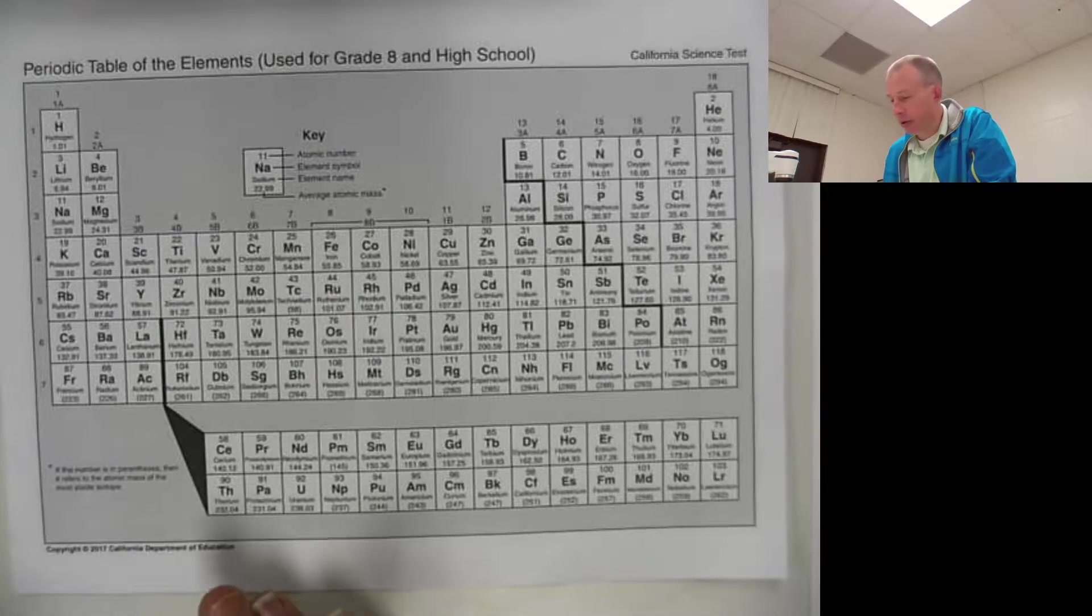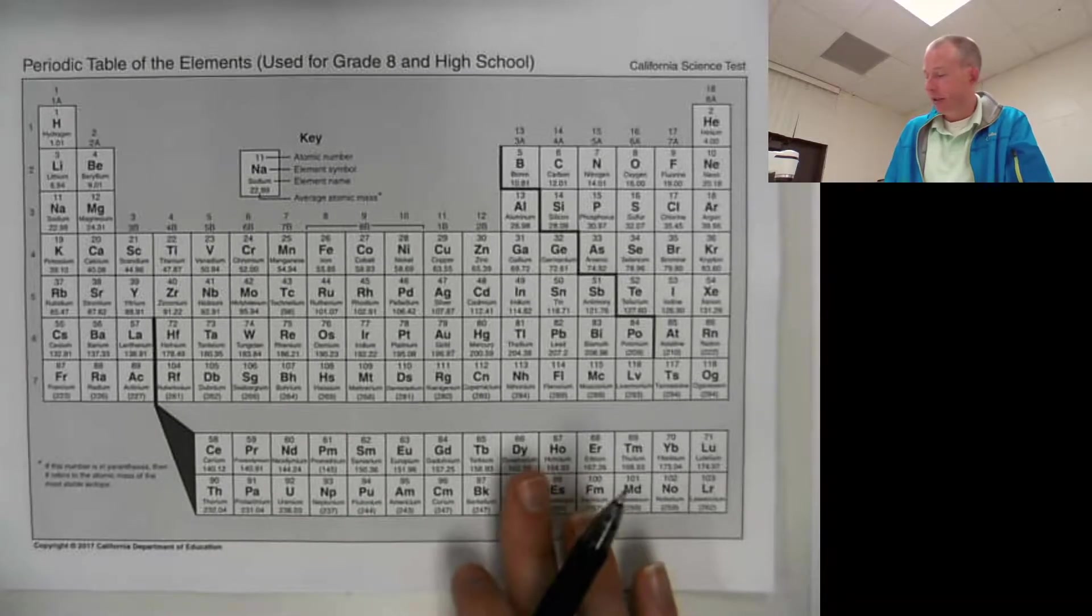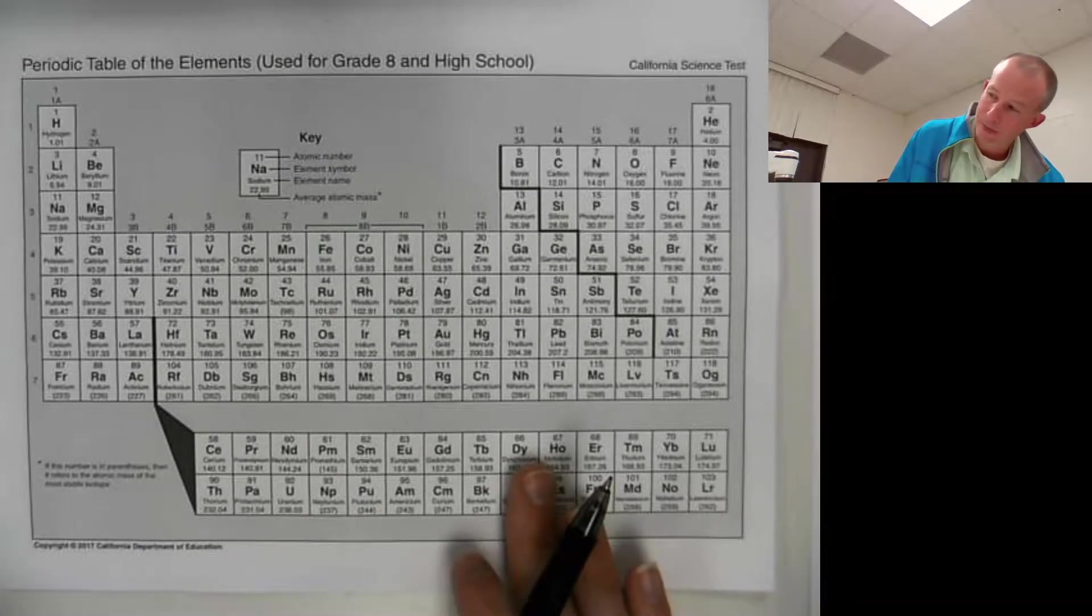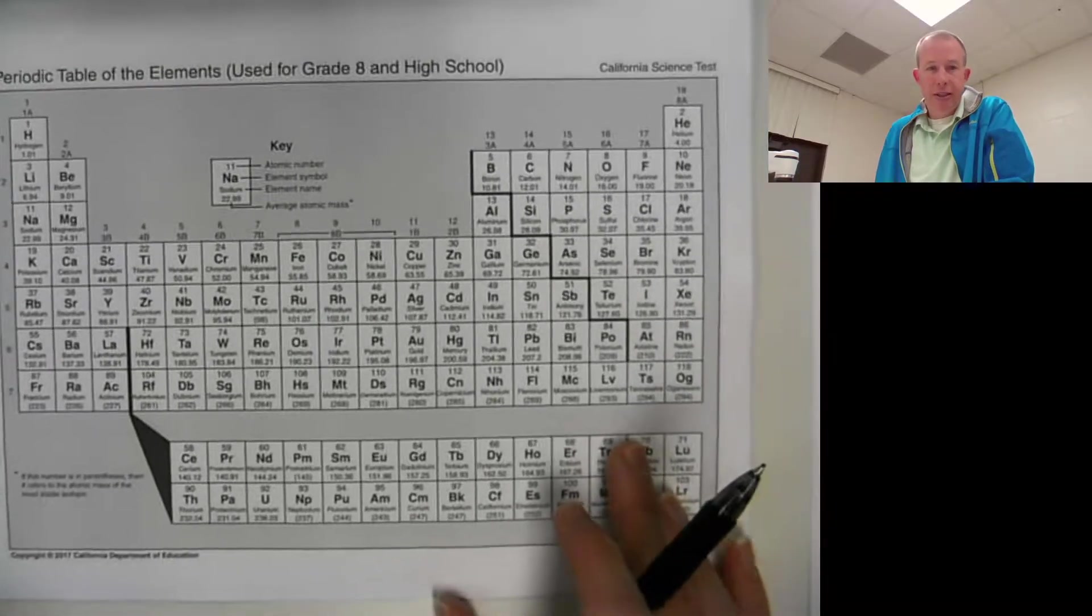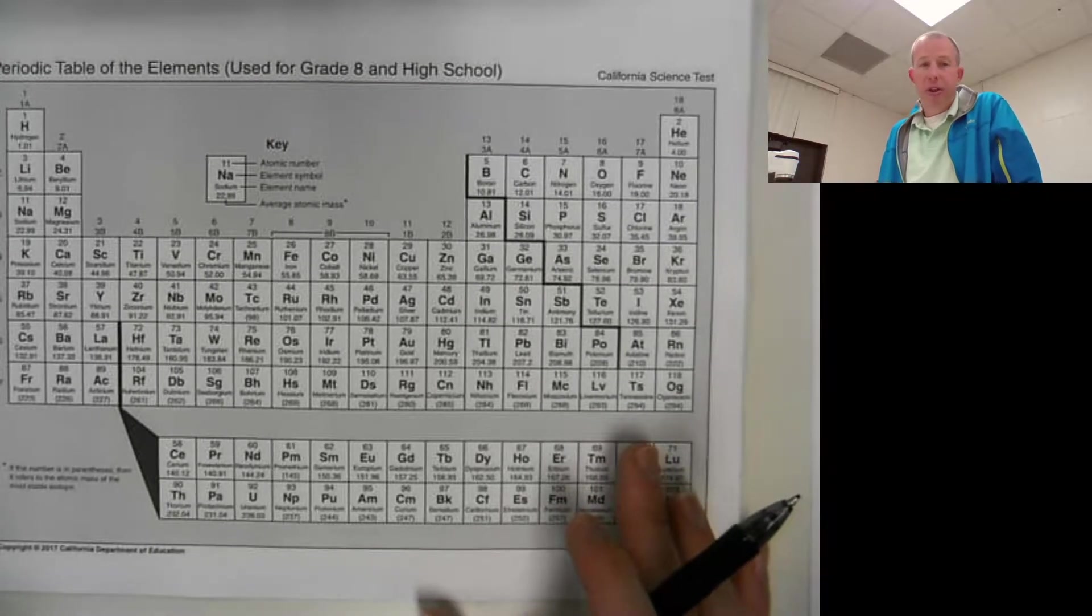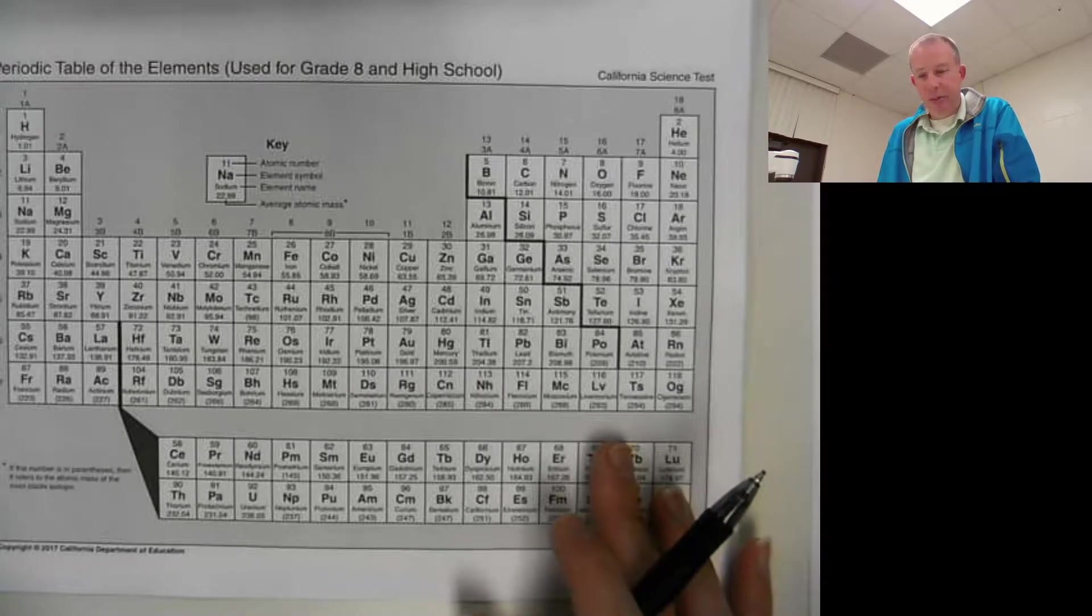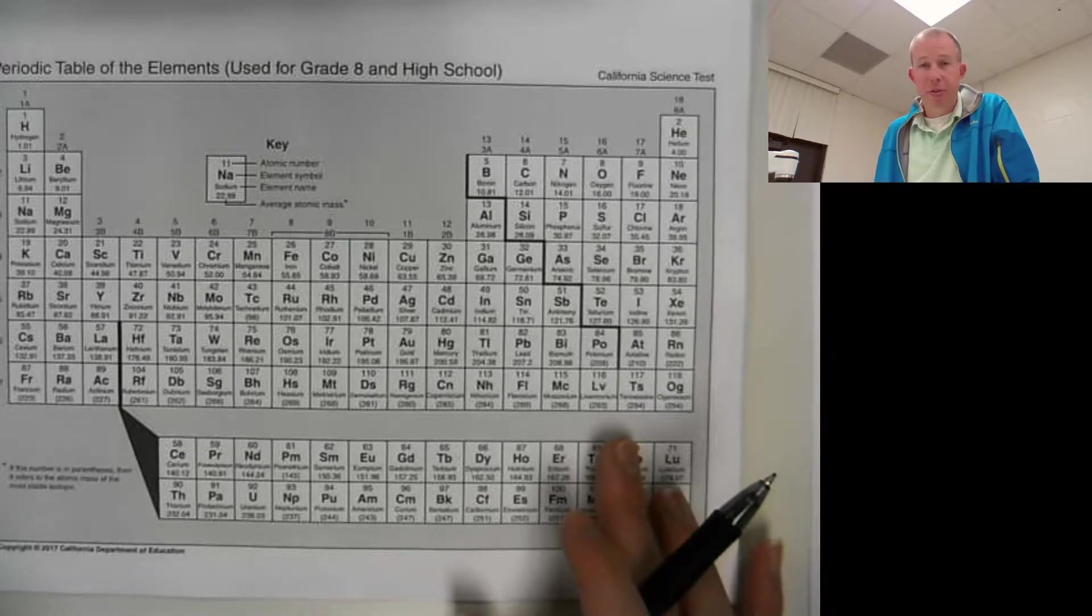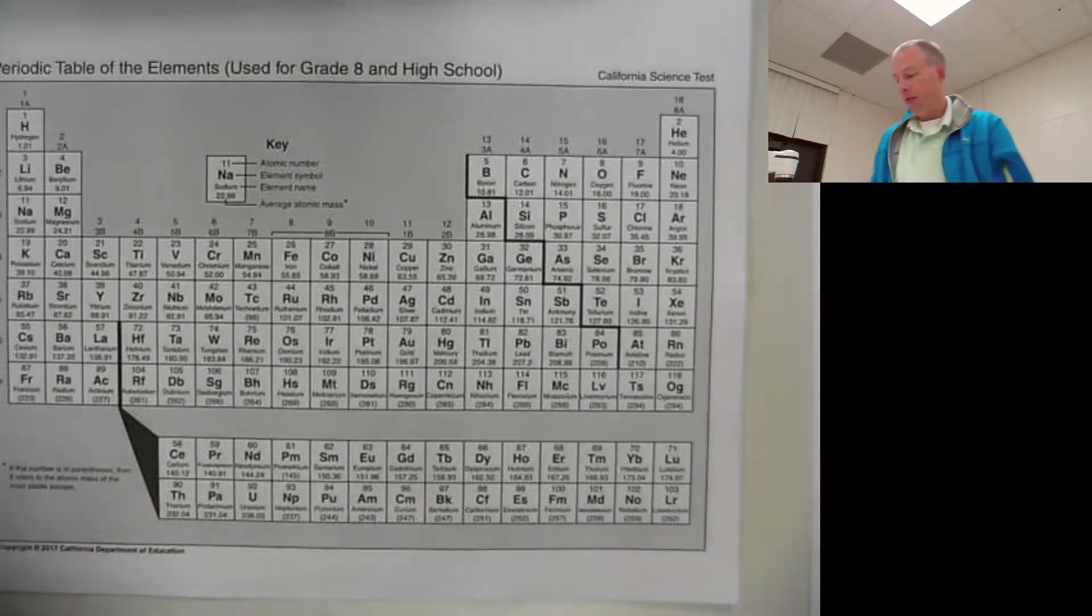All right, hello. So today we're going to talk about the periodic table. I'm going to go over some really basic stuff about the table and basically how elements are organized, what you can do with the information you find there, how to find the number of protons, neutrons, and electrons given certain characteristics and properties, how to write stuff in isotope notation. It's just going to be really quick for you.